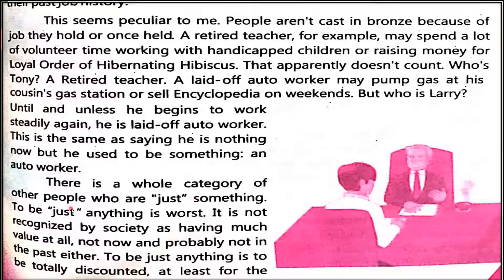'There is a whole category of people who are just something — to be just anything is the worst. It is not recognized by society as having much value, not now and probably not in the past either. To be just anything is to be totally discounted.' In this paragraph it is told that to be just ordinary is the worst — if someone has an ordinary job, we don't give them value and respect in society. We judge people by their duties and jobs, not knowing their nature or their humanity.